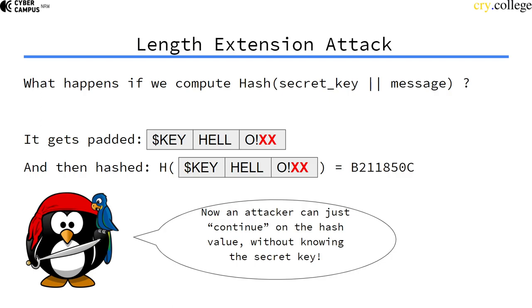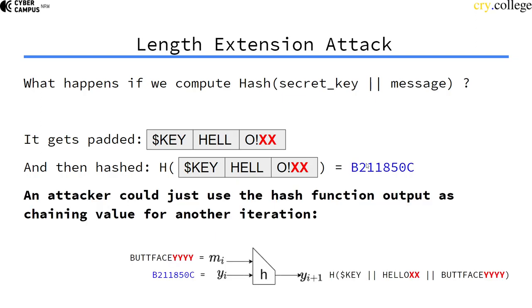What happens if we hash the secret key and the message using a Merkle-Damgård type system? First, it gets padded — let's say it gets padded with two extra bytes — and then it gets hashed, giving us a hash value. From this hash value, you can actually just continue computing.